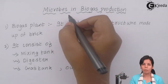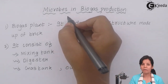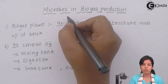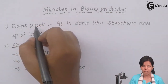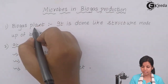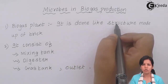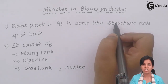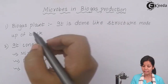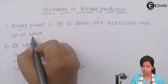We were studying about how microbes have been used for the production of biogas. A biogas plant is basically a dome-shaped structure made up of bricks, which is enclosed and can be made very easily. This brick dome-shaped structure consists of certain parts.